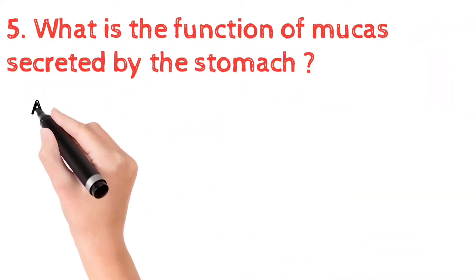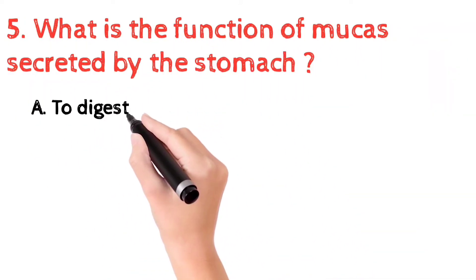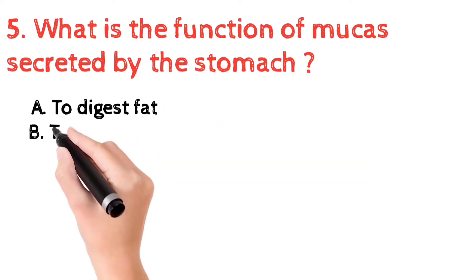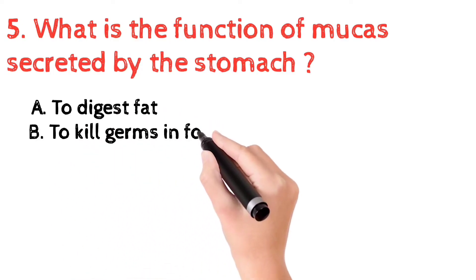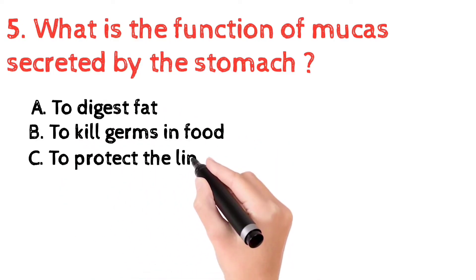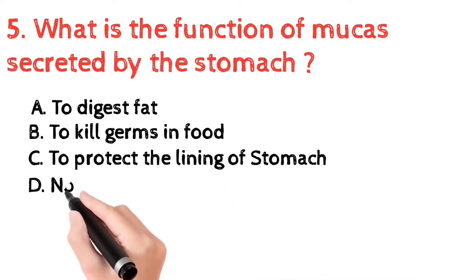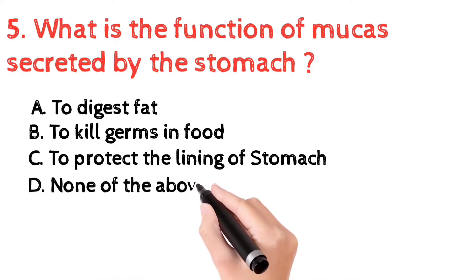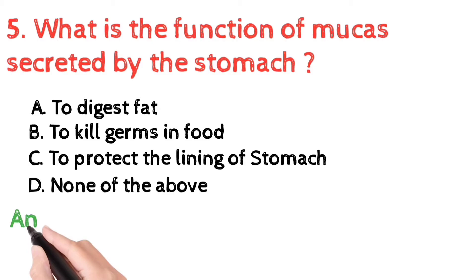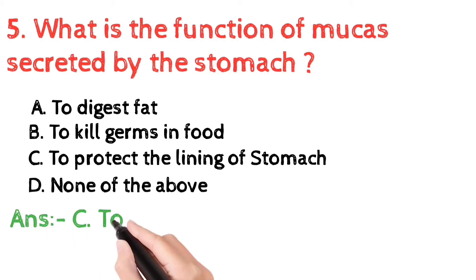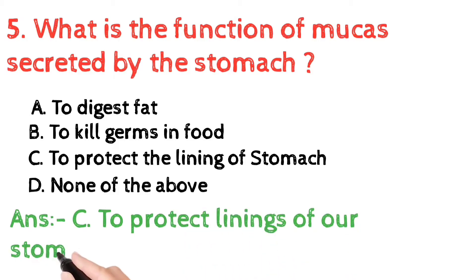Question number 5: what is the function of mucus secreted by the stomach? a) to digest fat, b) to kill organisms in food, c) to protect the lining of the stomach, d) none of the above. The correct answer is c) to protect the lining of the stomach. Mucus protects the inner lining of the stomach from hydrochloric acid.